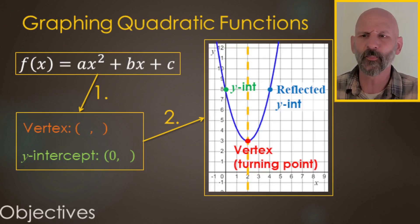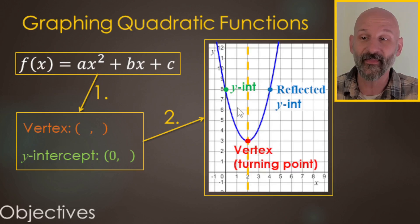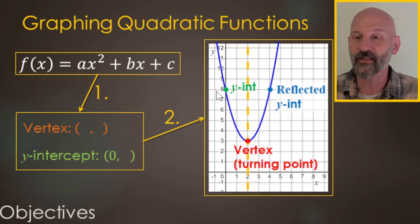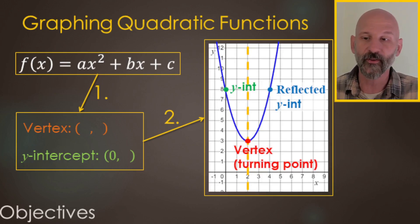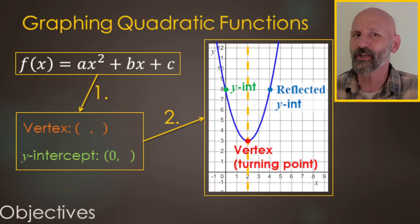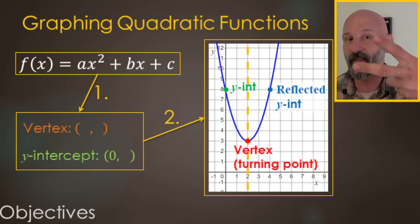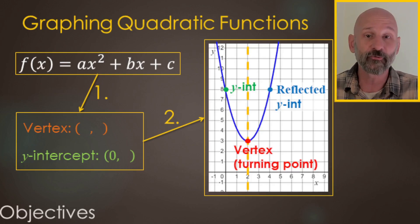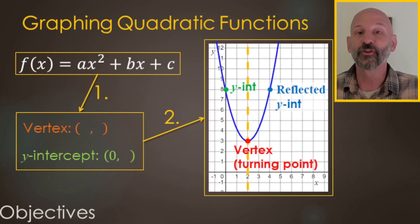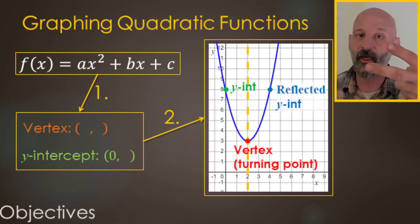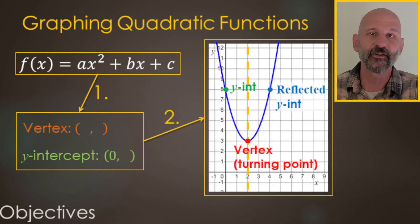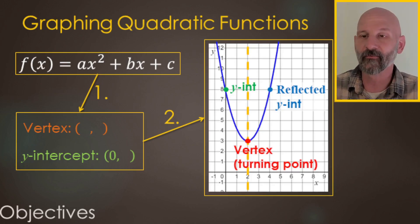If you are using a computer, a lot of times they'll have you click on the vertex first and then click on any other point — we're doing the y-intercept — and it will automatically reflect to the other side. If you're doing it on a computer, you normally just need two points: the vertex and then one other point. If you're hand-drawing, you'll need the vertex, the y-intercept or another point, and then reflect it over the axis of symmetry.